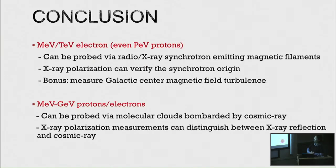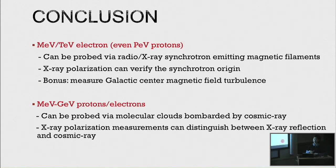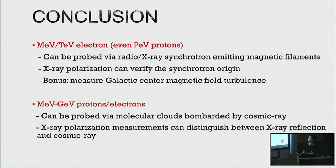In conclusion, giant molecular clouds and magnetic filamentary structures in the galactic center can probe different populations of cosmic ray particles. The ultimate goal is to answer whether high-energy cosmic ray particles exist in the galactic center and what the accelerator or origin of such particles could be.